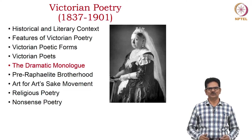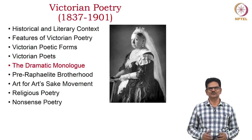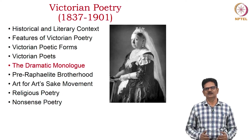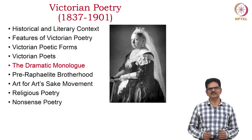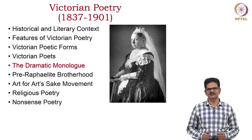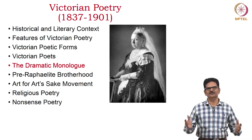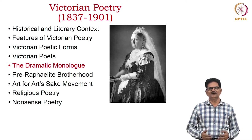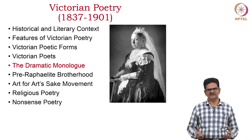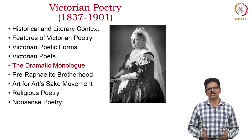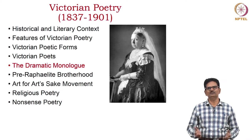Hello! We are going to deal with Victorian Poetry this week. We begin with a general introduction to Victorian Poetry from this period 1837 to 1901. First, we will pay attention to the historical and literary context, identify the features of Victorian Poetry, discuss certain poetic forms practiced during this period, list a few poets who were prominent in this period, and pay special attention to the dramatic monologue form which became very popular during this time.